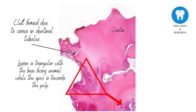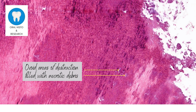The lesion is typically triangular, with the base facing the enamel and the apex towards the pulp. Clefts formed due to caries are also visible on histological examination. A closer look at dentinal tubules reveals the presence of ovoid areas of destruction that are filled with necrotic debris.